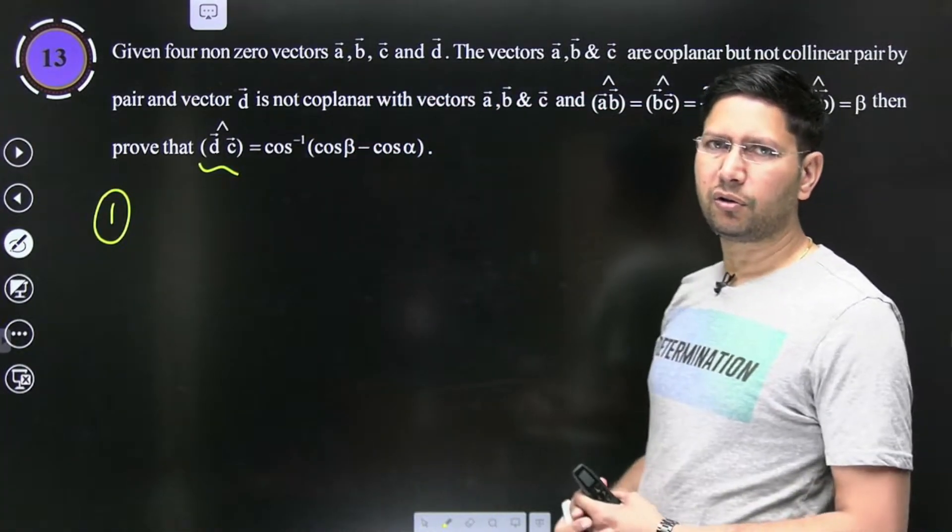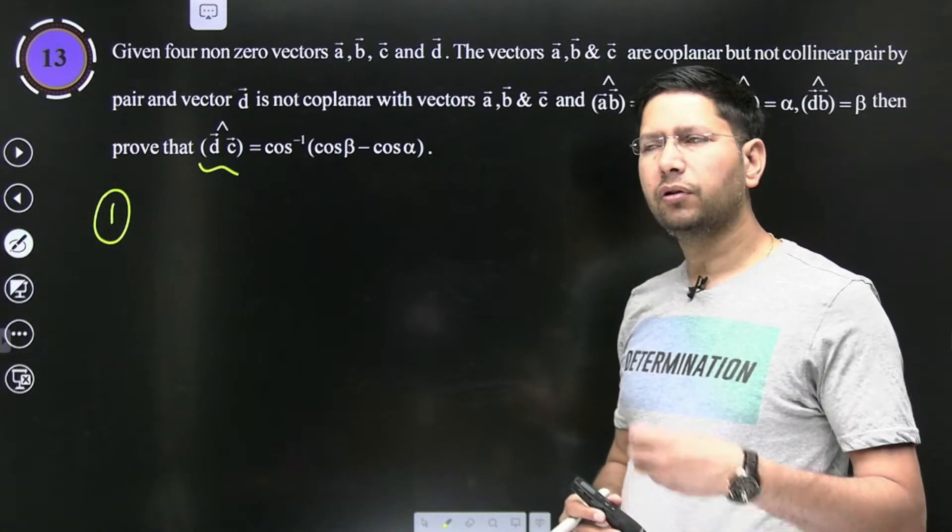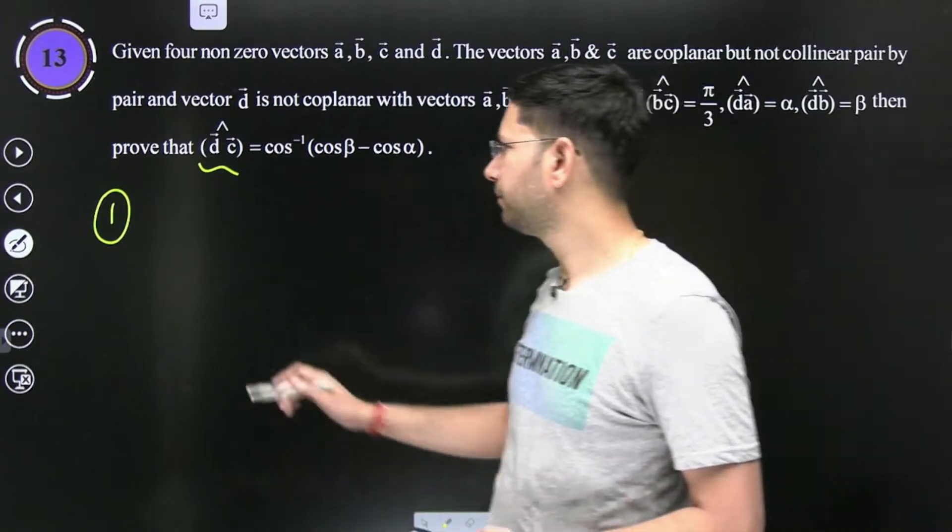To bachon aise karte, sab jaga cos, cos, cos chal rahi hai, to aap kya kar hai, sab ko unit vector maan lijiye. Jab bhi angle nikal rahe hai, to aap d cap or a cap ke beech mein jo angle nikal rahe ho, maan lijiye.